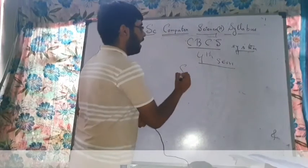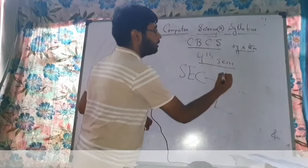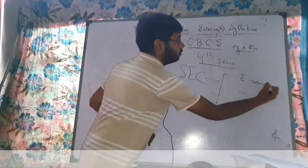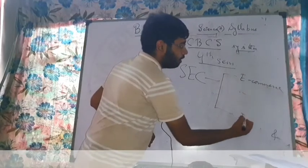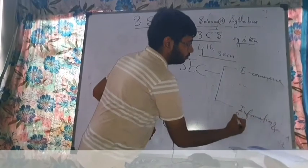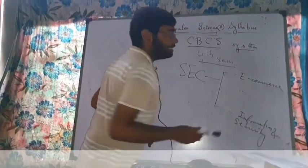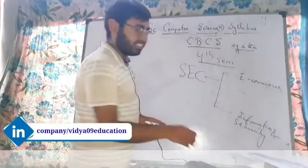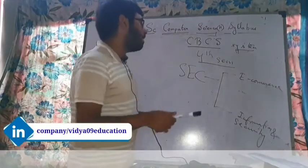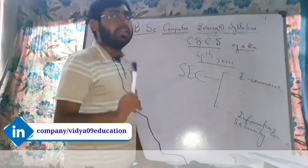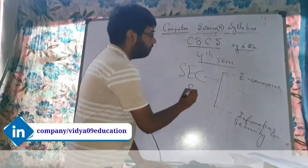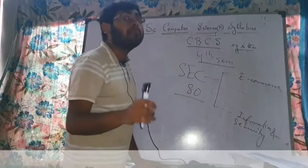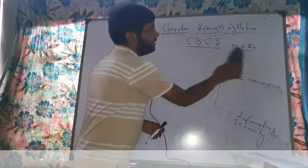Along with the three CC papers in fourth semester, you also study another SEC paper with two choices: E-Commerce or Information Security — you study only one. I opted for E-Commerce as I found it interesting. Note that the SEC paper has only a theory component of 80 marks — no practical — and this applies to both the third and fourth semester SEC papers.